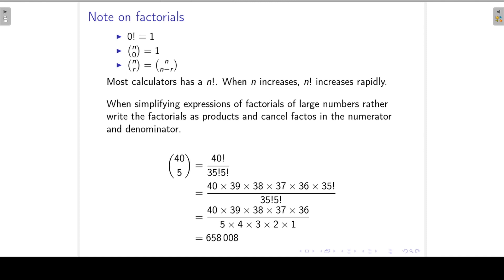In conclusion, just a few notes on factorials. 0 factorial is 1, like we said before. Then n combination 0 is 1. If we write it out, n combination 0, by definition, that is n factorial over (n minus 0) factorial times 0 factorial. N factorial is n factorial, and 0 factorial is 1, and that just simplifies to 1. Then the third note there, n combination r is the same as n combination (n minus r), and if you write it out, you will see that to be true.